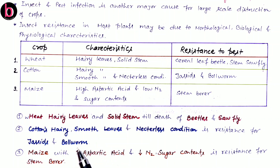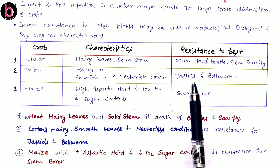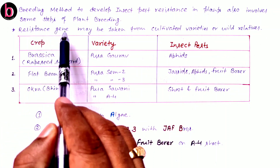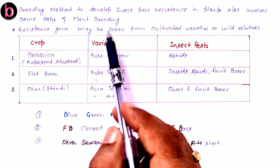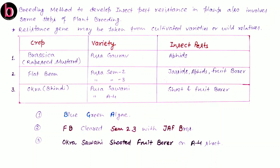These are simplified sentences that include all crops with their respective characteristics and resistance to pests. To develop insect pest resistant varieties using plant breeding, the methodology is the same five steps of plant breeding. The key requirement is a resistant gene for the particular pest, which can be obtained from cultivated varieties or their wild relatives.